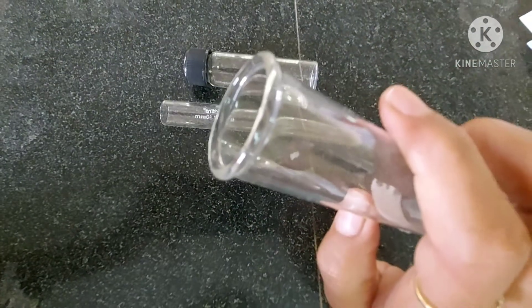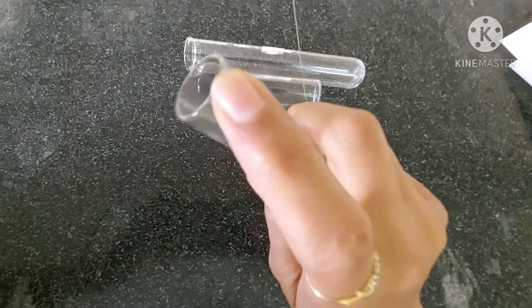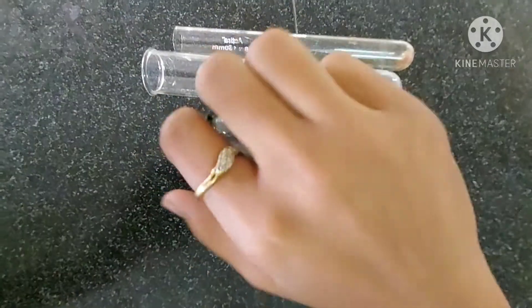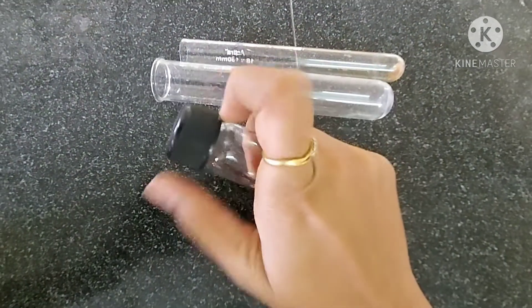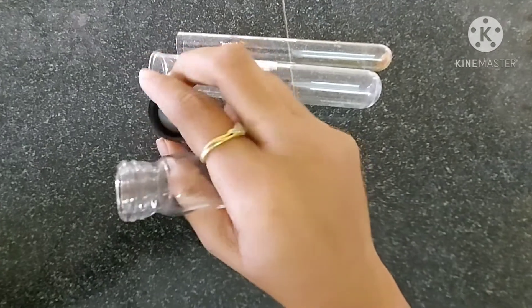...it is called a test tube. And if the neck is smooth at the open end from the outside, it is called a culture tube. When the neck of the test tube has screws so that a plastic or rubber cap may be fitted...